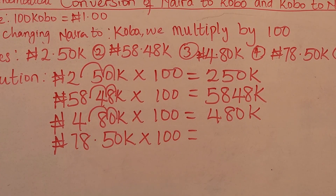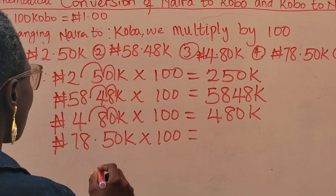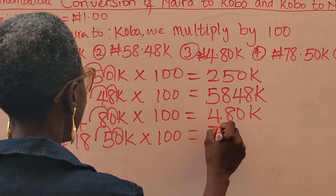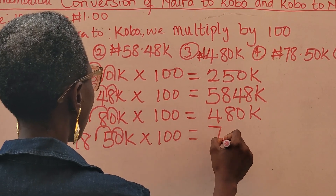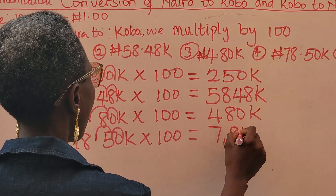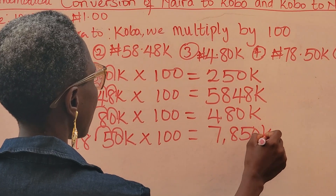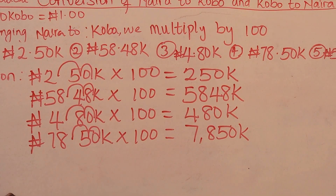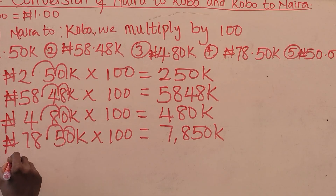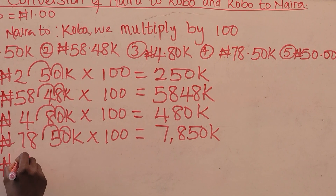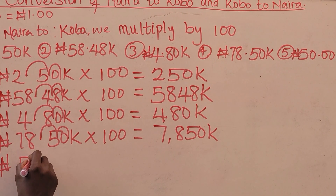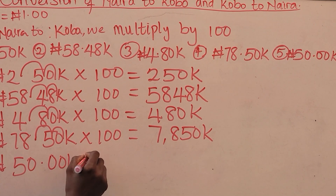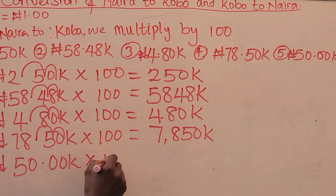Next we have 4 naira 80 kobo. Then 78 naira 50 kobo times 100 — move the decimal point twice forward, one and two — giving 7850 kobo. The last one is 50 naira multiplied by 100.